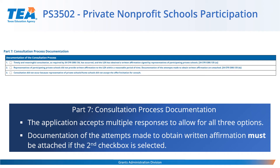Part 7 is the Consultation Process Documentation. The application accepts multiple responses to allow for all three options. Documentation of the attempts made to obtain written affirmation must be attached if the second checkbox is selected. This documentation should describe the attempts the LEA made to obtain written affirmation from private school representatives that timely and meaningful consultation occurred. There is a private schools consultation template available — if you do not have a copy, contact your regional negotiator to request one.